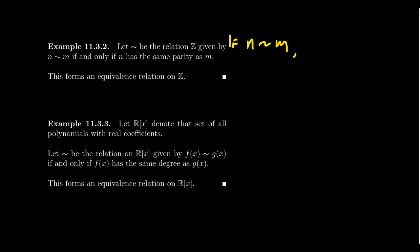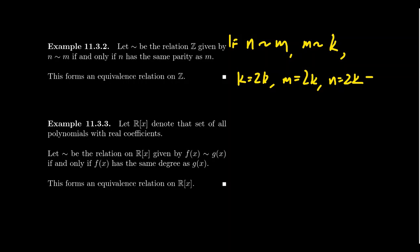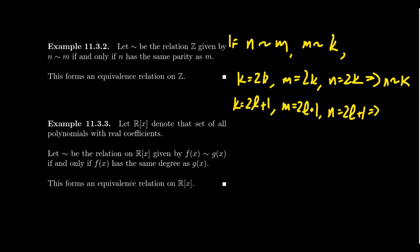For transitivity, suppose n is related to m and m is related to k. If k is even, then since m has the same parity, m is even. Since n has the same parity as m, n is even. So n and k have the same parity — both even. The odd case follows similarly. This is a trivial argument, but it's important to establish that the parity relation is an equivalence relation.